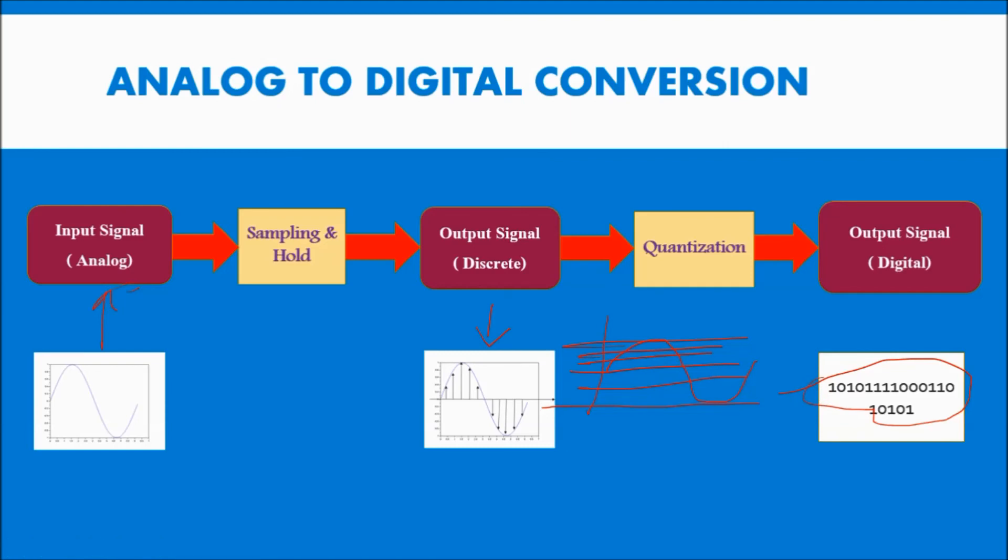This will be nothing but analog to discrete or digital conversion. Input is continuous one. It is given to sample and hold circuit. Then, next the output signal is discrete. That is given to the quantization. And then output is in terms of digital. This is analog to digital conversion.